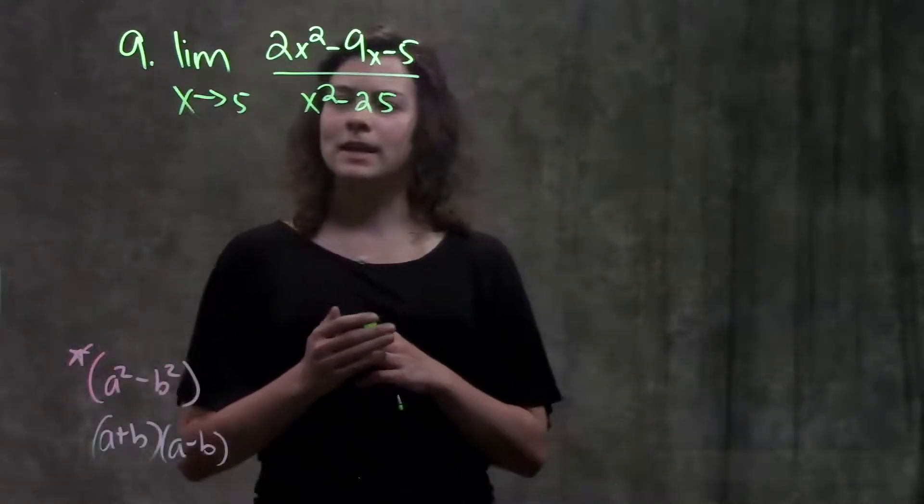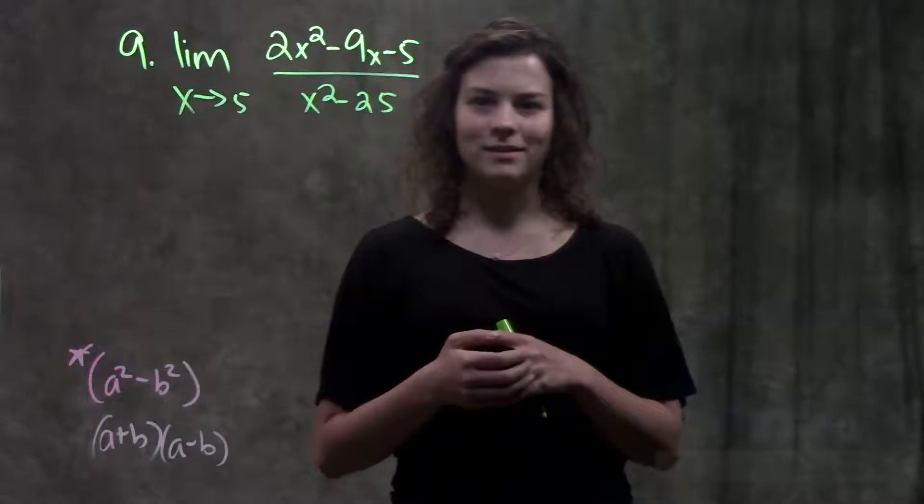So this is number 9 in your book. It gives us a limit as x approaches 5 of that function. Alright.